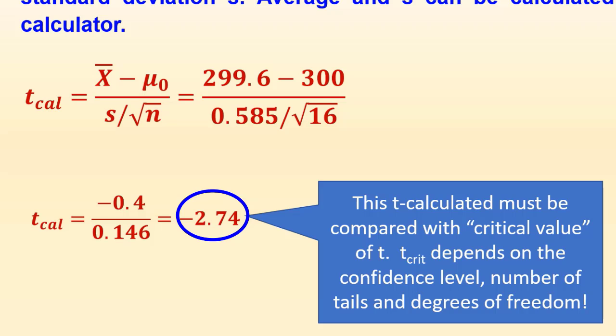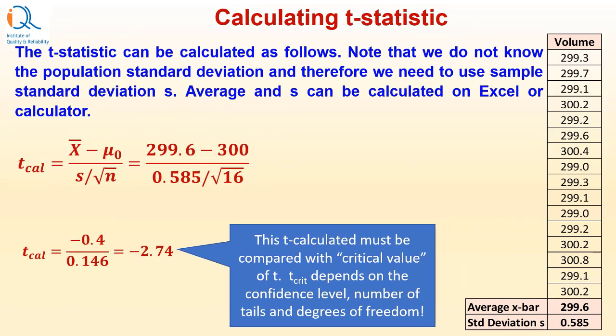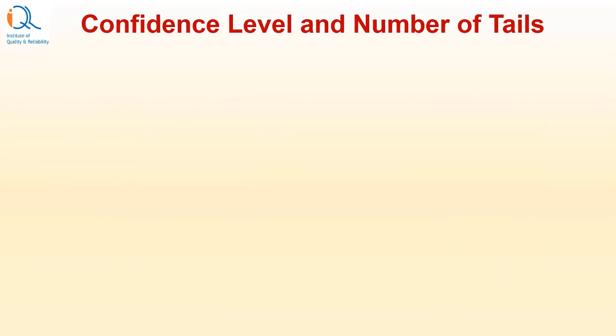Now, this t calculated must be compared with critical value of t. And t critical depends on the confidence level, number of tails and degrees of freedom. Now, we need to decide the confidence level and understand the number of tails.